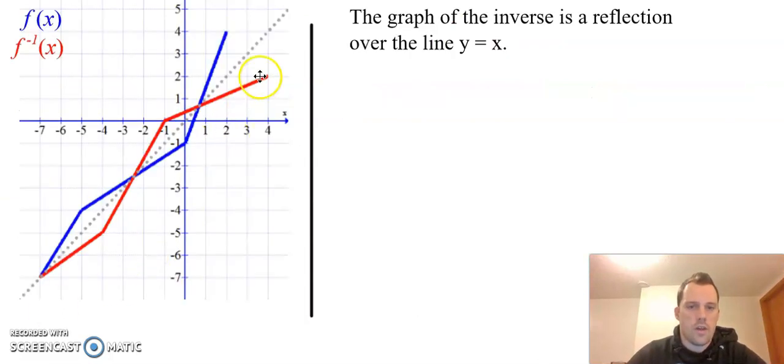Recall that the graph of an inverse, we just reflect across the line y equals x. Or we can take some key points from our graph or our function, flip the x and y values around, and graph those new points for our inverse.